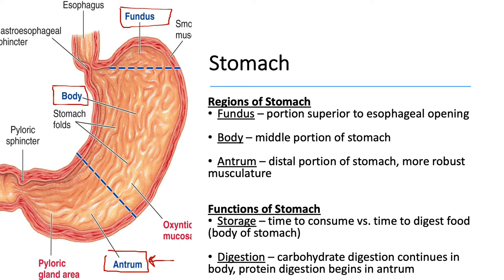The antrum has more robust musculature, and this is where we get the majority of mixing of contents with gastric juices. One of the main roles of the stomach is storage — it serves as that holding bag. While it may take just minutes to consume a meal, it takes the body much longer to properly digest and absorb it. So the stomach can meter out contents in small doses into the small intestine, rather than flooding it all at once.